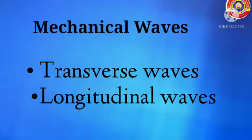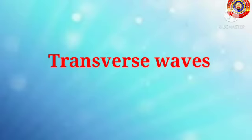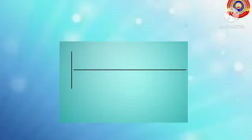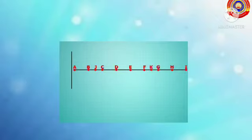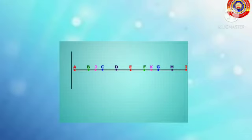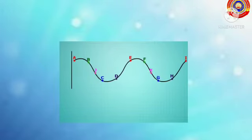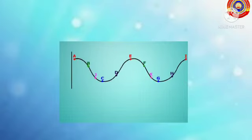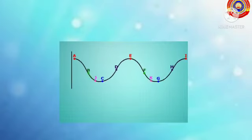First we are going to learn about transverse waves. Let's imagine a rope — one end of the rope is tied to a window. Here the rope is the medium. All the particles in the medium are at rest when the wave is not formed. The particles A, B, C, D, E, F, G, H, I, J, and K are the particles in the medium.